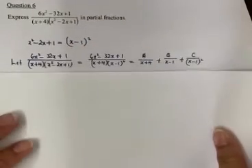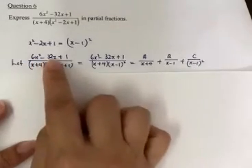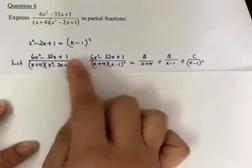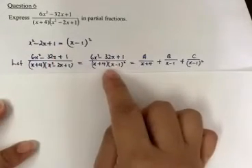Therefore, I will end up with this assumption statement. So let your 6x squared minus 32x plus 1 over x plus 4 times x squared minus 2x plus 1. This can be rewritten into this form.